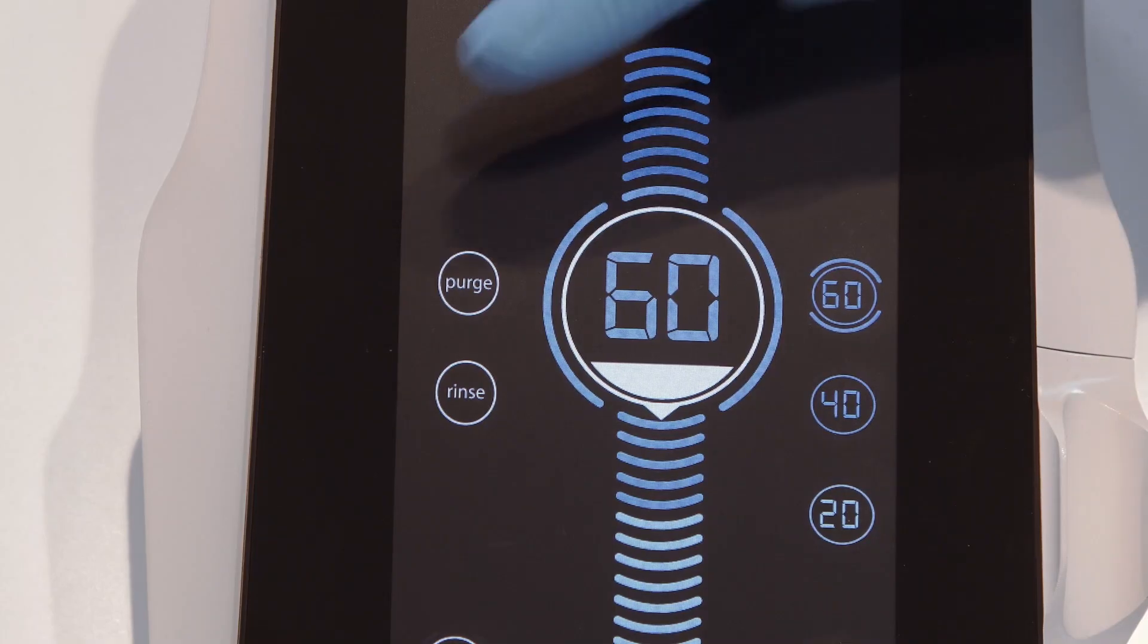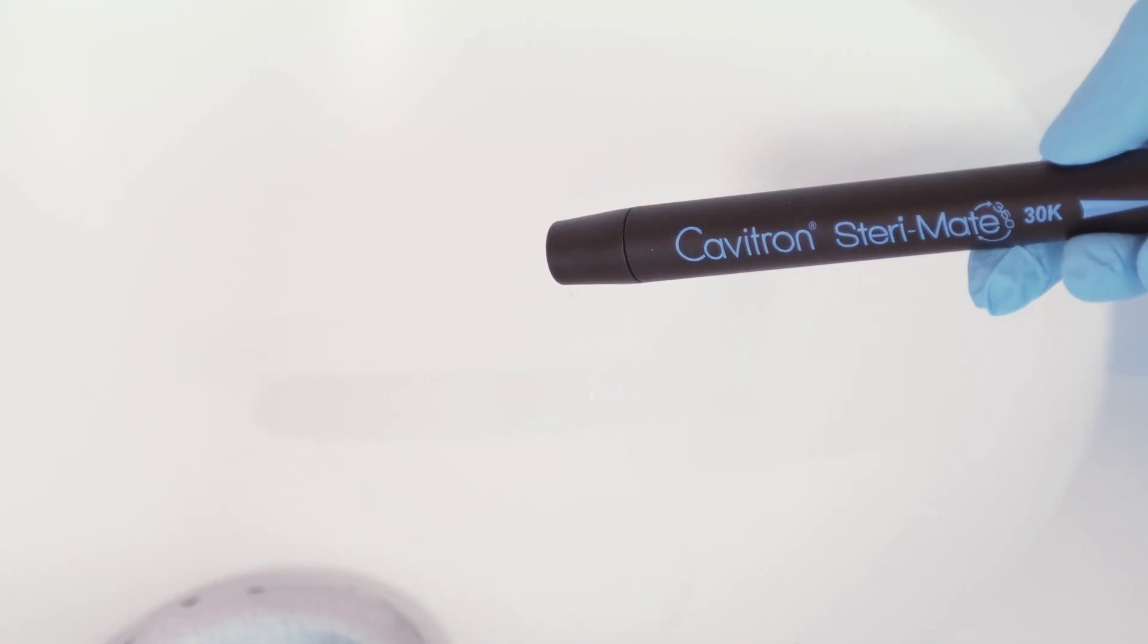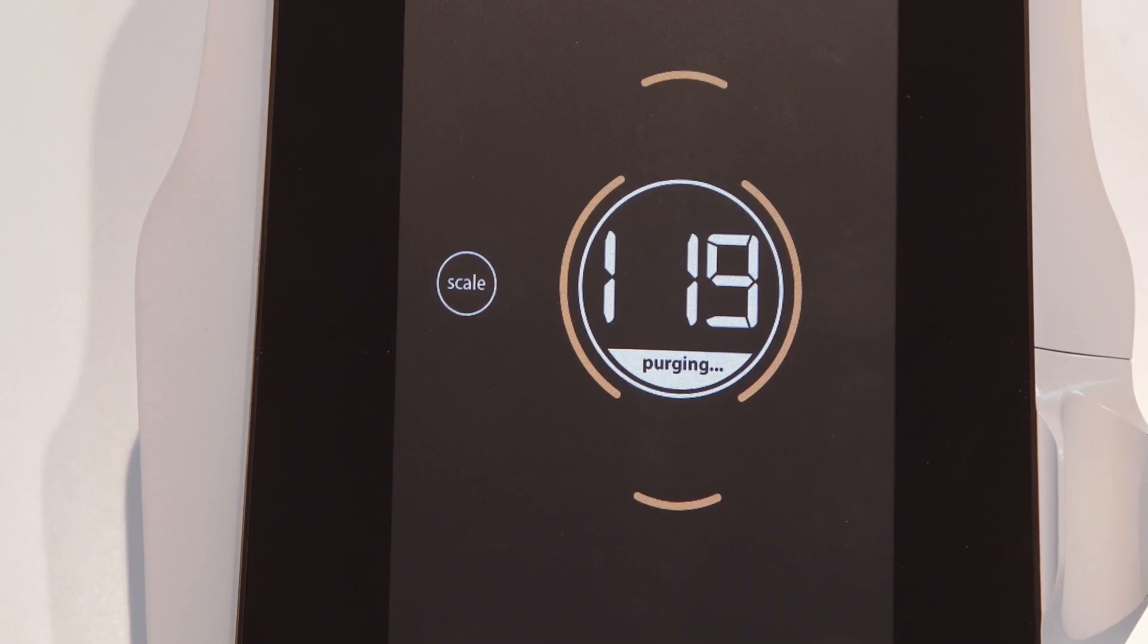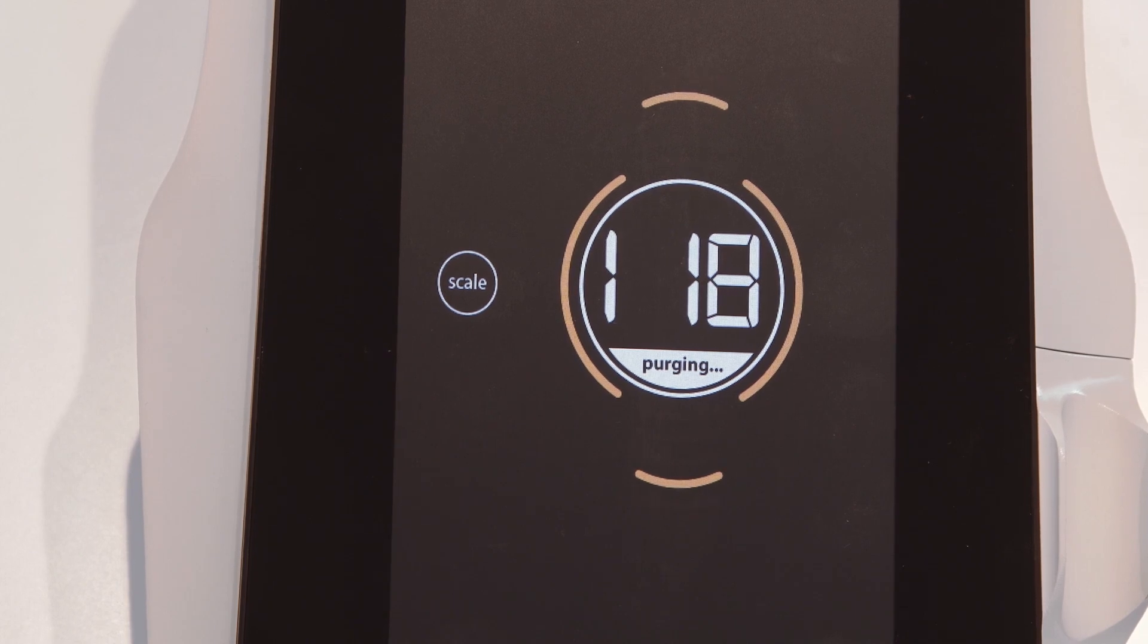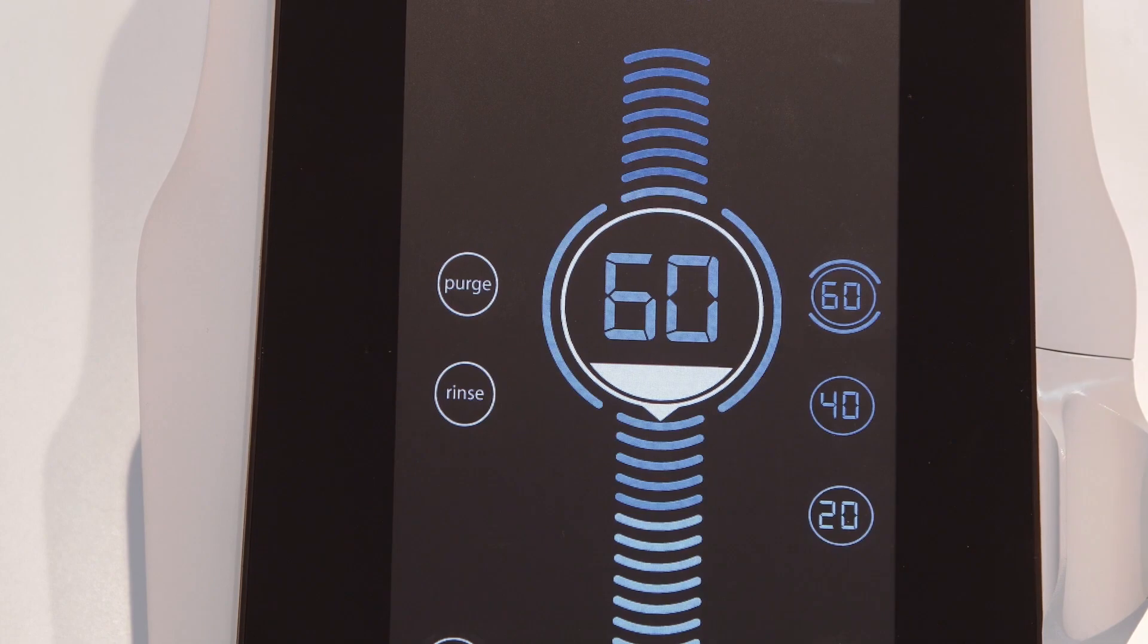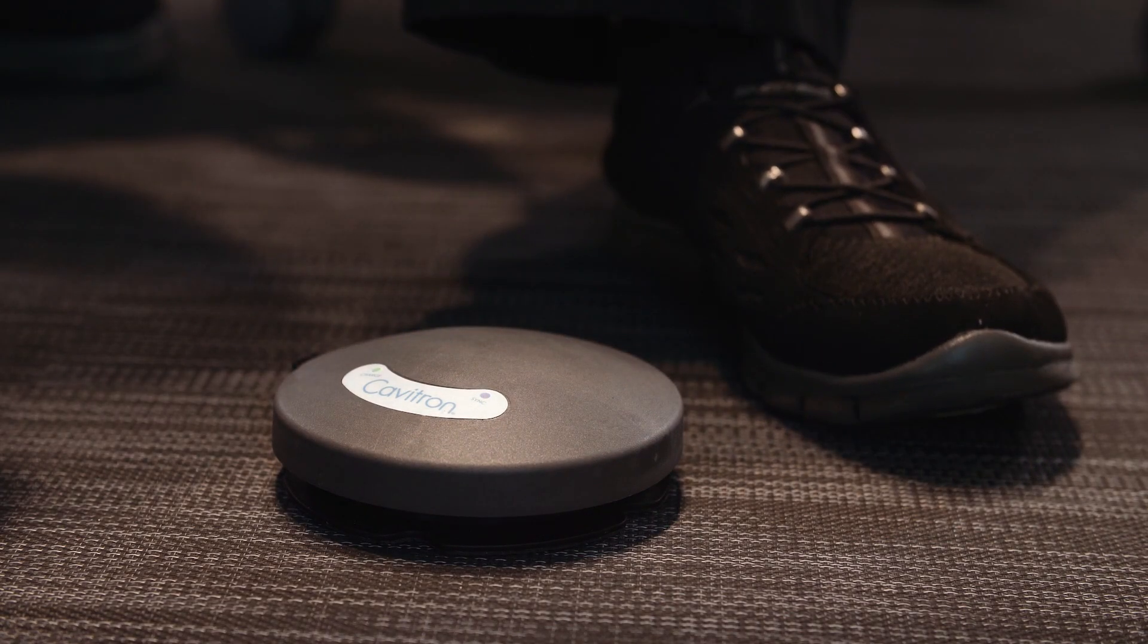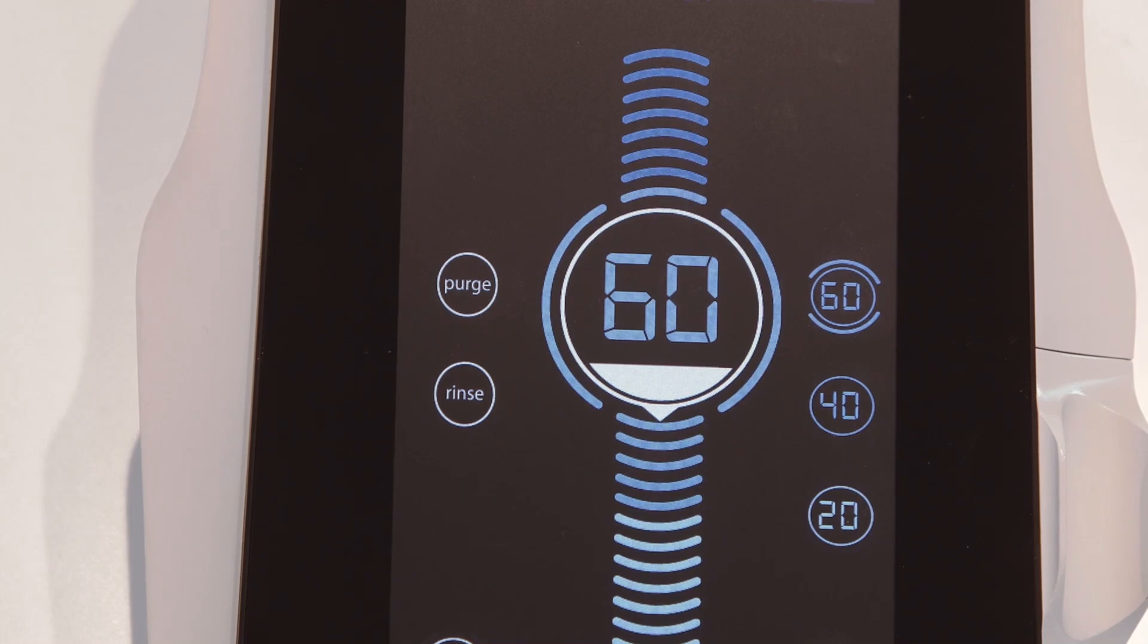This setting is used to flush the water lines at the beginning of the day or between patients. Purge will run automatically for two minutes, and adjustments can be made for maximum water flow with a countdown in seconds shown on the screen. Press the scale button to return to the main screen, or simply tap the foot pedal. After a two-minute countdown, it will then return to the main screen.